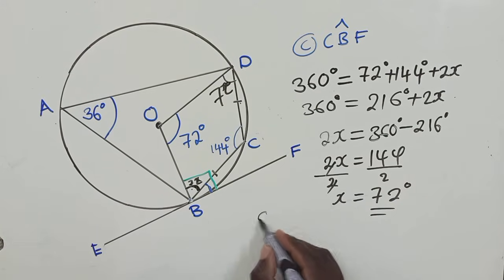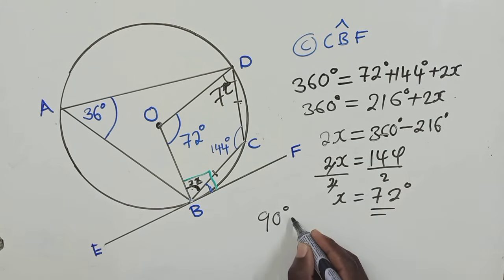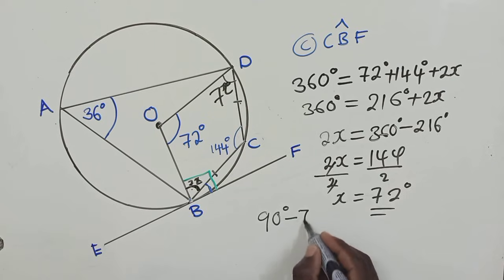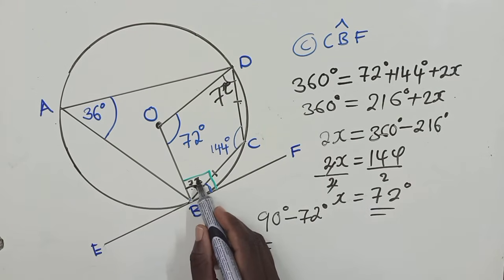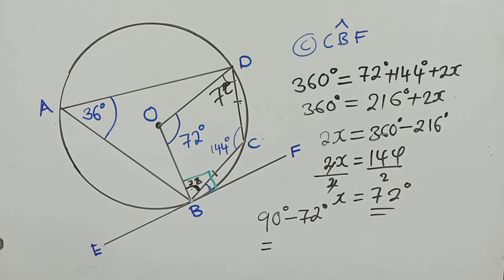We are looking for the angle which is right here. So since this is 90, we just say 90 degrees minus 72 degrees. What are we getting? We want to subtract this from 90, we are getting 18 degrees.